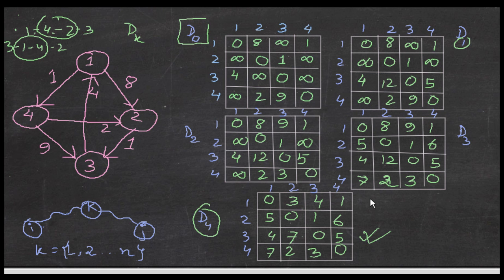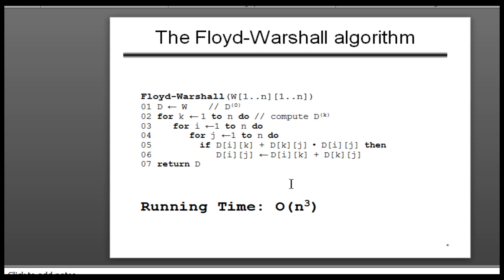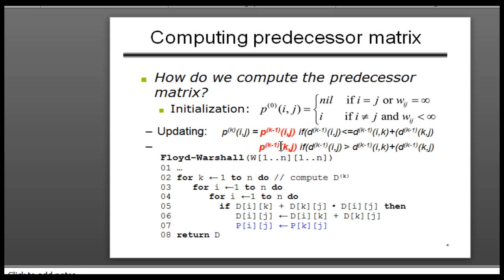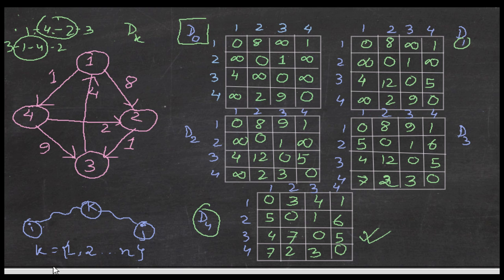This is the final answer. The time complexity is O(n³). The update rule is: if D[i][k] + D[k][j] < D[i][j], then update D[i][j] = D[i][k] + D[k][j]. There is also a predecessor table for finding the path. I hope you understood this tutorial — please subscribe and give a thumbs up if you want more tutorials like this. Good luck!